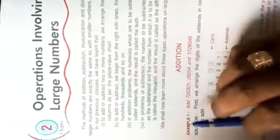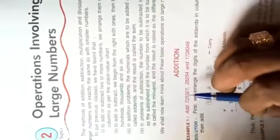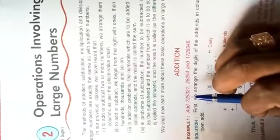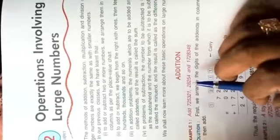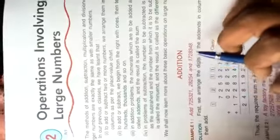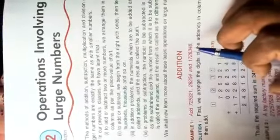First heading: Addition. Example: Add 725321, 28254, and 1728348.